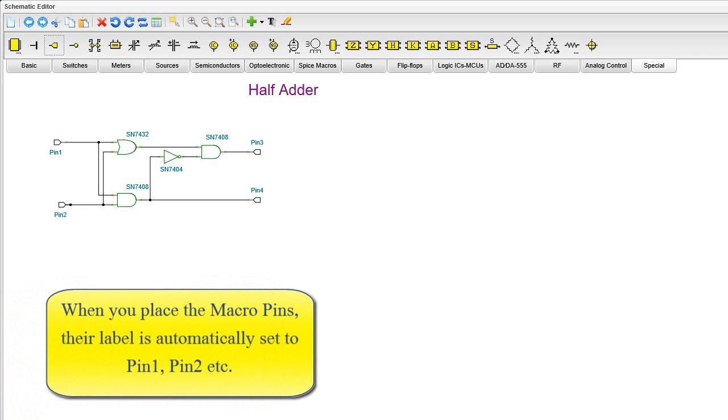When you place the macro pins, their label is automatically set to pin 1, pin 2, etc.